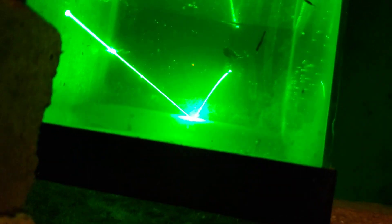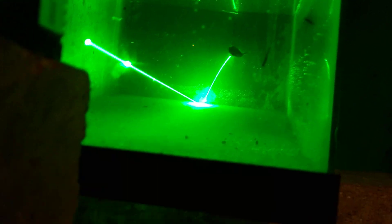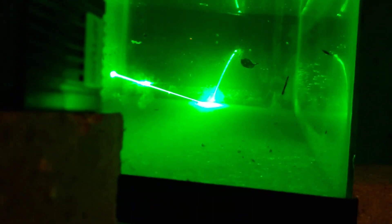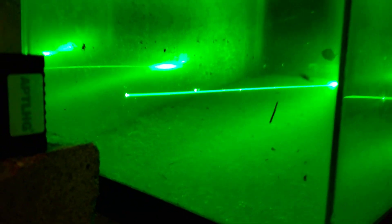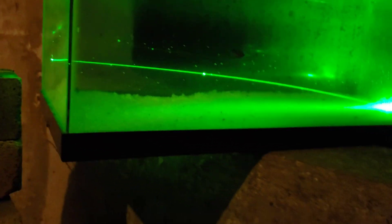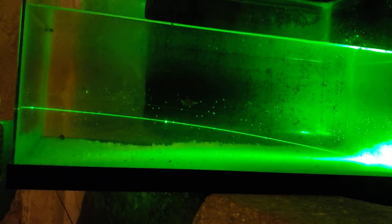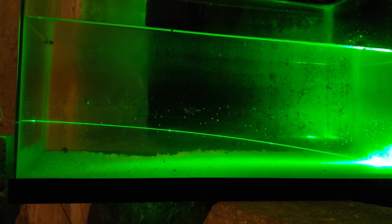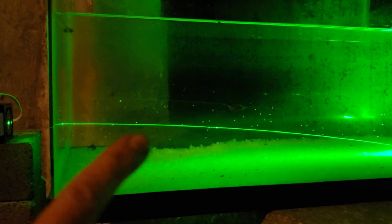There's a layer of super dense salt water at the very bottom. Then you see when we look at it from the side it's curving. So what's happening is the light curves in its path as it goes that way.